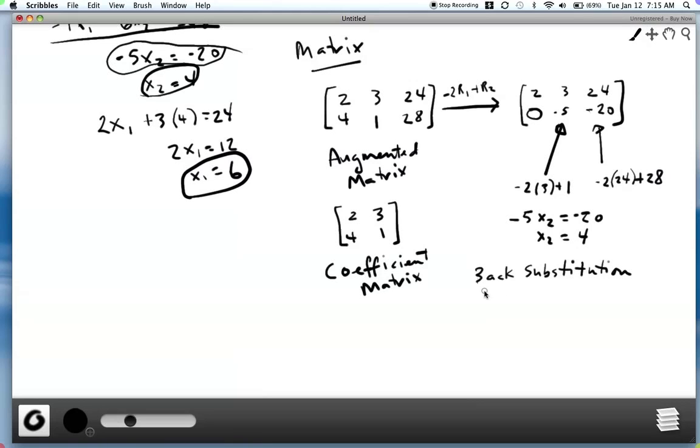Then we do a process called back substitution. And that just means you back up to the next row and you substitute. So if we back up to the next row, then that would be backing up to the first row. And there I've got 2x1 plus 3x2. But now I know what x2 is. It's 4. So that's the substitution part. So I plug that in, equals 24. And we know that we end up with x1 equals 6 at this point. So here we've solved the system using elementary row operations and then using back substitution.